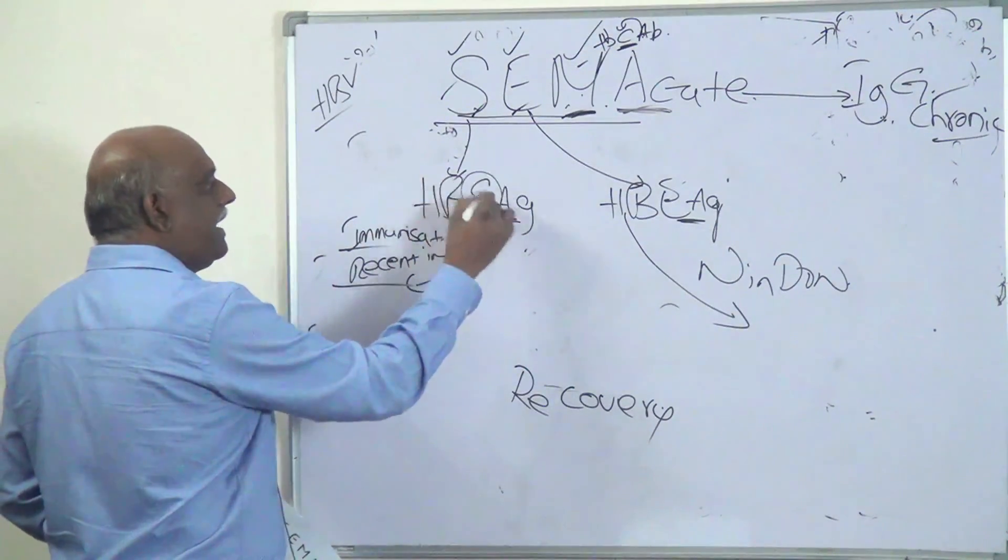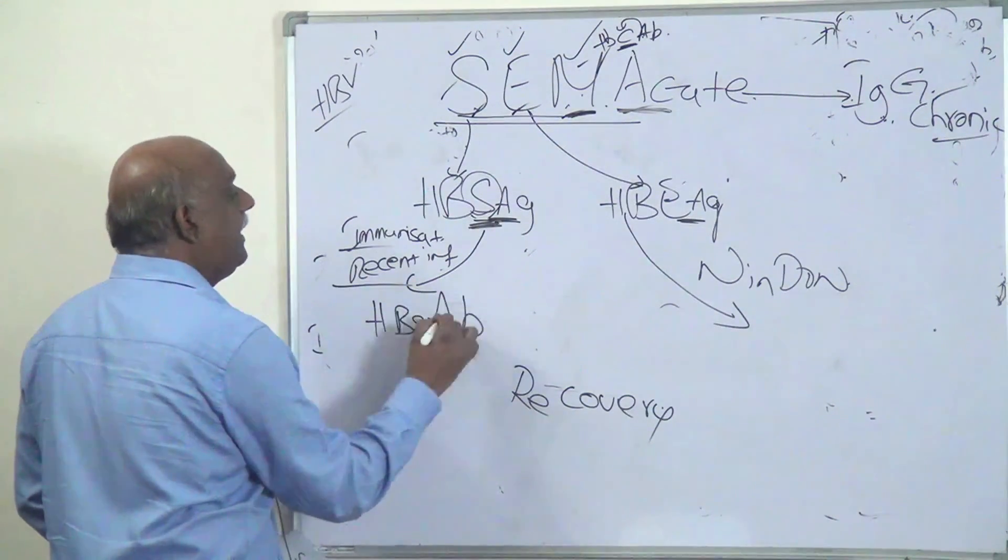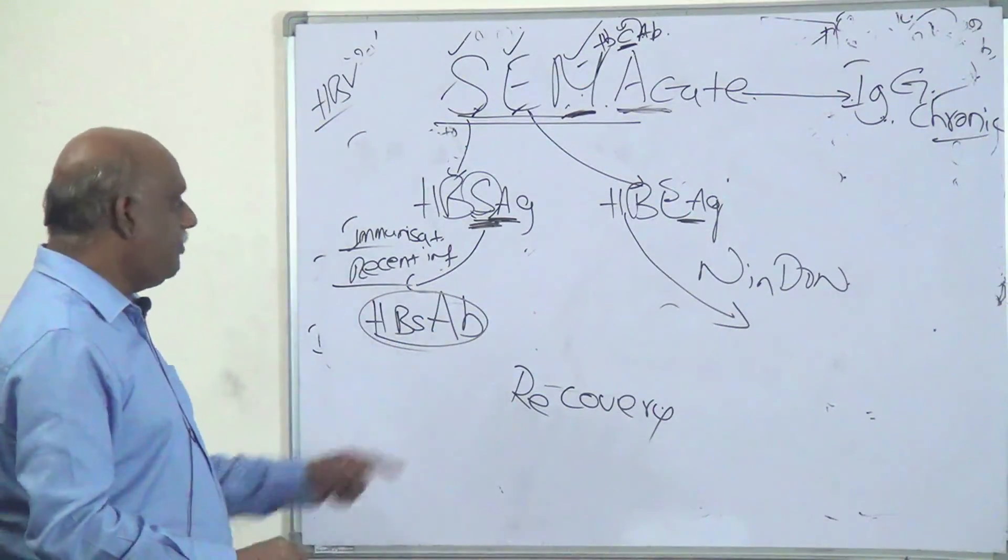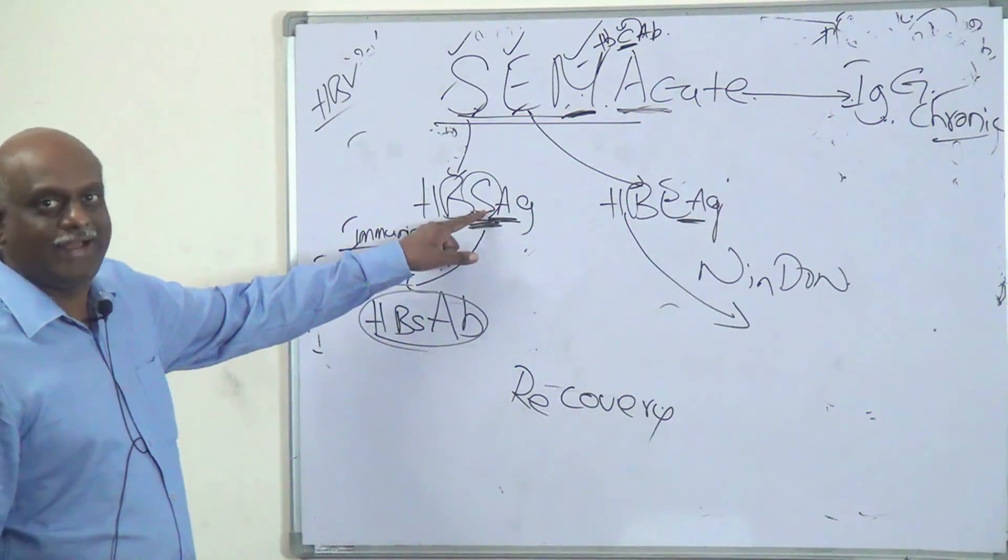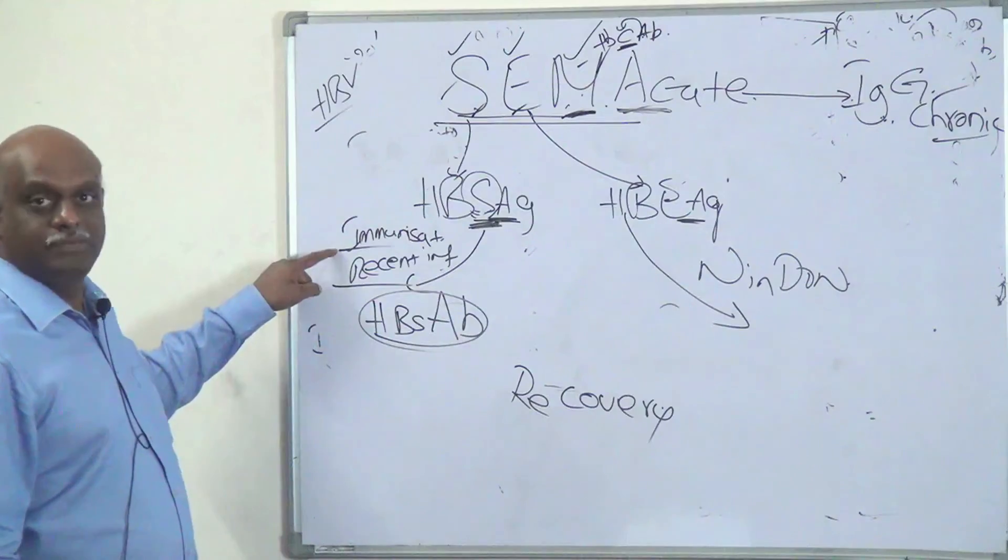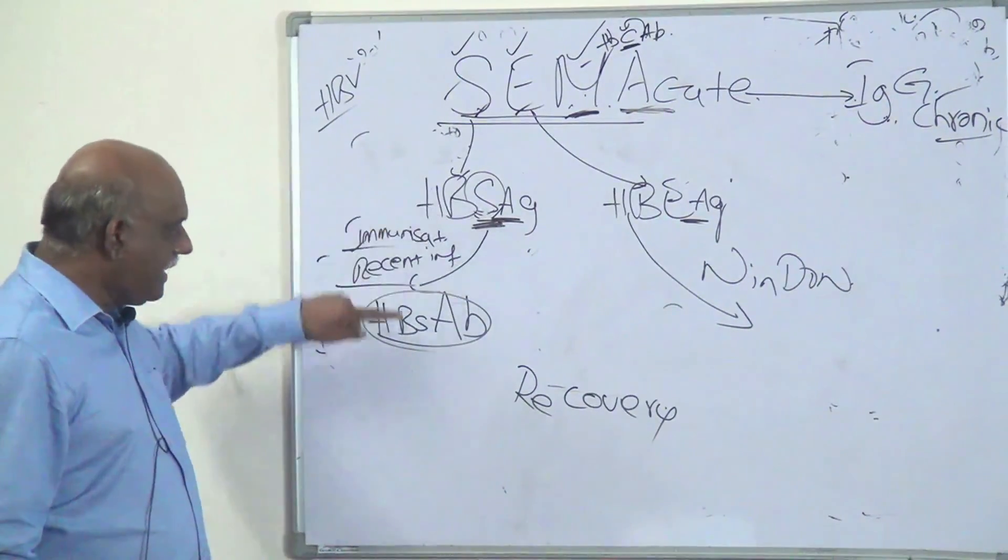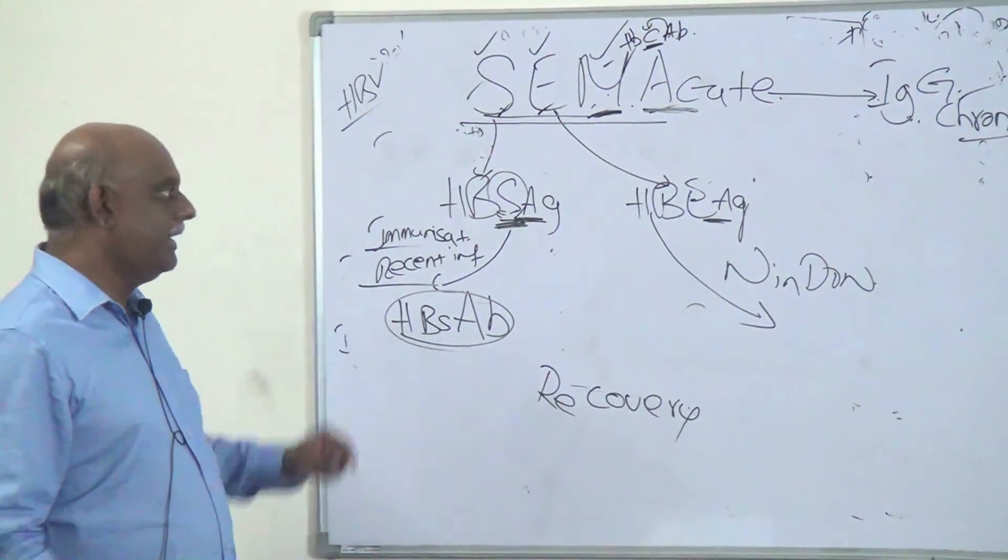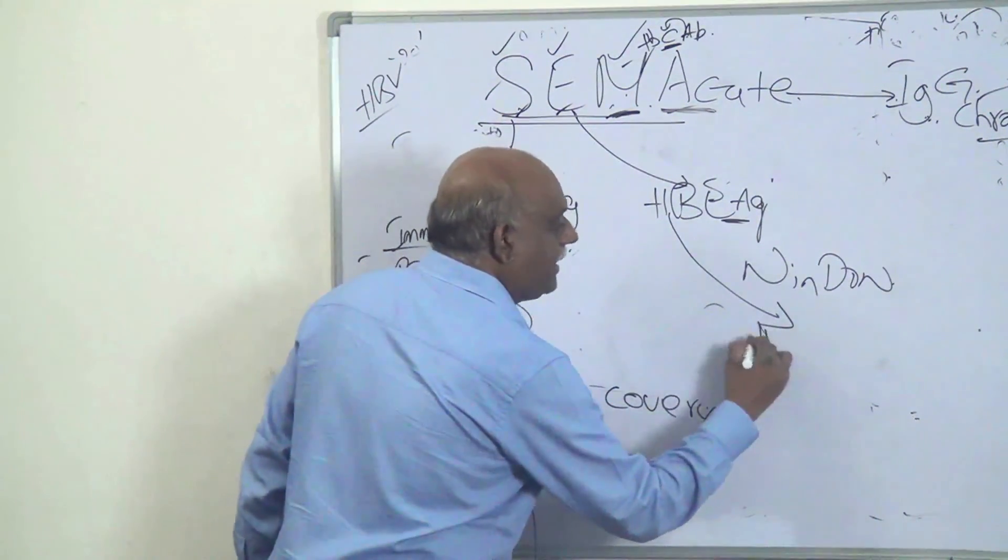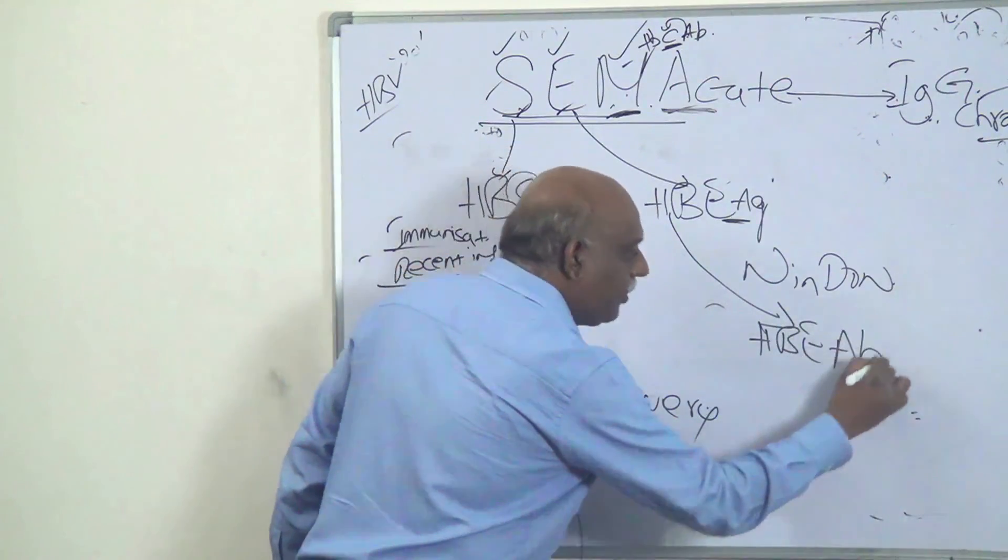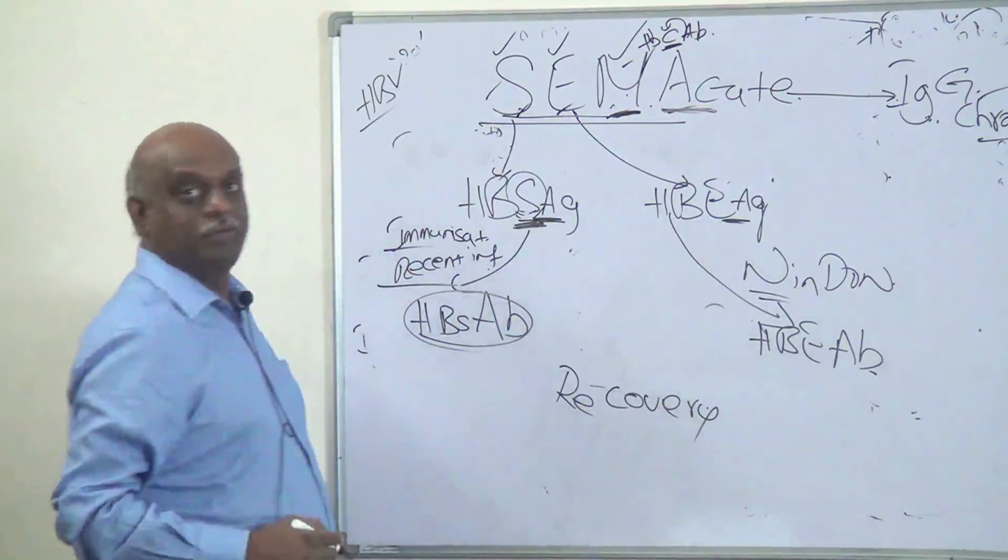If you undergo immunization or recent infection, then surface antigen antibody is there. That is, HBsAb will become visible. When antibody is there, it is like mother-in-law. If antibody comes, daughter-in-law will leave the home. Surface antigen is like daughter-in-law. So, I am, that is, immunization or recent infection, surface antigen's antibody will appear. Now, widow, that is window, what is happening in that, HBeAb antibody will appear, that becomes window period, I am widow.